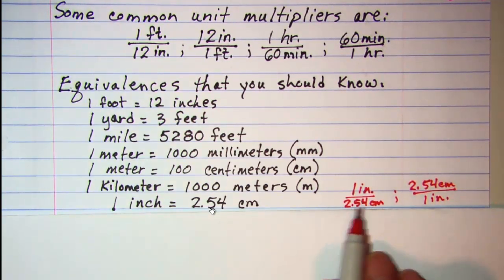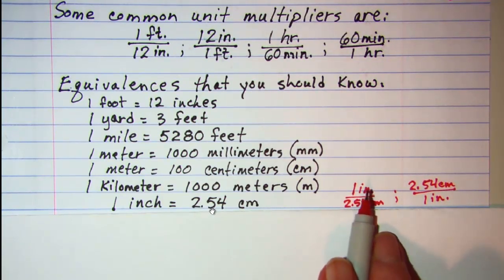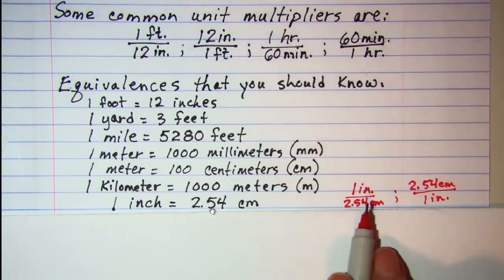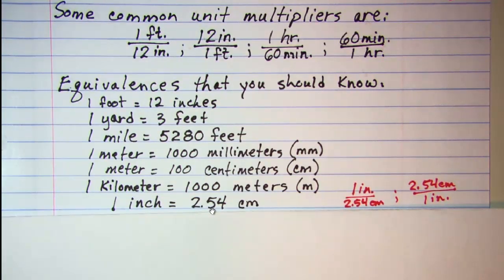Now this is a handy unit multiplier for if you need to convert from the English system of measurement to metric system of measurement. So if you're going from miles or yards or feet or inches and you want to get to millimeters, centimeters, meters, kilometers, then you can use this as a bridge to get from one to the other. Very handy unit multiplier to remember.